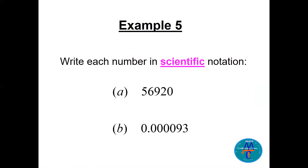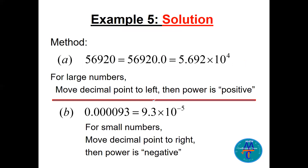First number: 56920. You move the decimal point to the left: one, two, three, four. So it becomes 5.692 times 10 to the power 4. That's it — finished. Second number: 0.000093. Move the decimal point to the right: one, two, three, four, five. I stop at 9 because 9 is less than 10, giving 9.3 times 10 to the power minus 5.